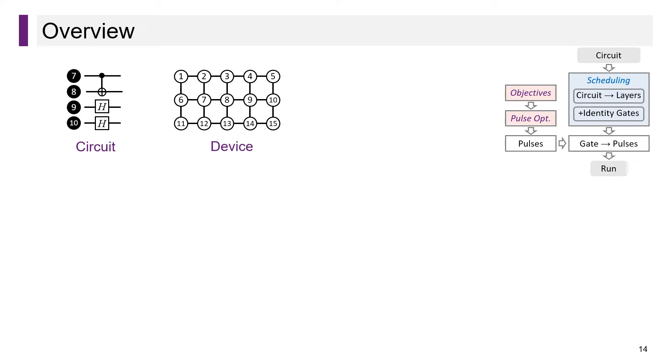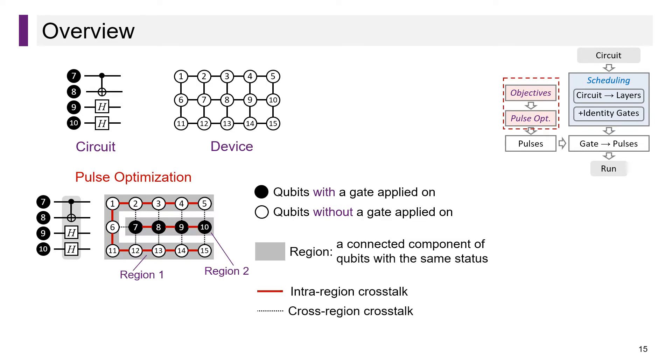We will give an example to motivate and illustrate our approach in more detail. Suppose that we shall execute a circuit on our 15-qubit device. For now, let's consider executing three gates in parallel. We use black vertices to denote qubits with a gate applied on and white for those without gates. We call the connected component of qubits with the same color a region.